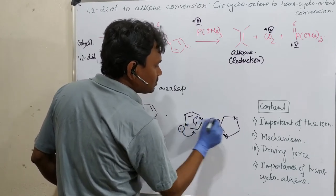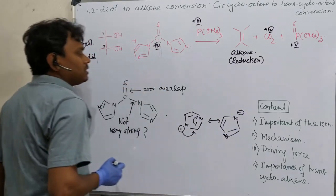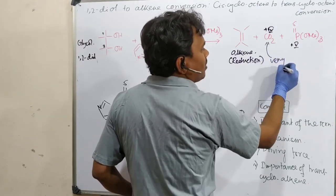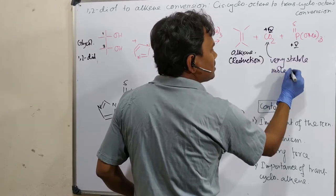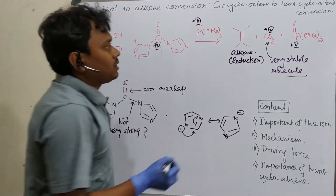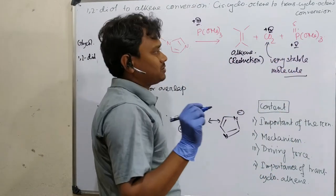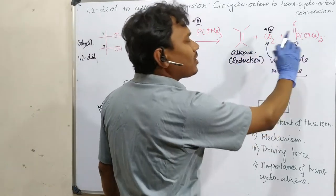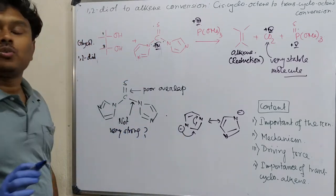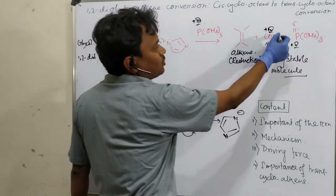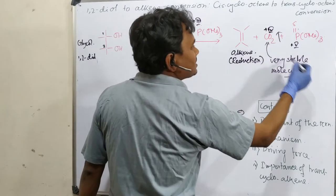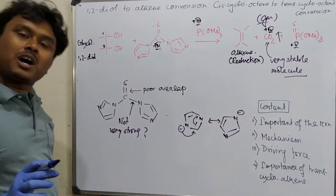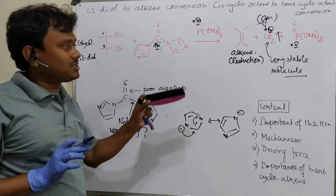The negative charge will push through the resonance, making imidazolide anion very stable. Compared to that, CO₂ is a very stable molecule. So from one unstable reagent, two stable molecules are produced, which drives the overall reaction. Also, from the reagent, one gas molecule (CO₂) is produced, so it is expected that this gas will eliminate from the reaction mixture and push the reaction forward. This is my personal opinion based on my understanding — I did not find this specific explanation in a book.